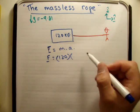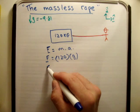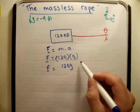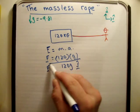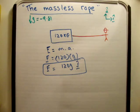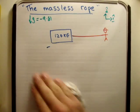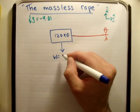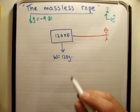Using Newton's second law, f equals ma, so F equals 120 times the acceleration. The acceleration of a body on earth is gravity, so this equals 120g in the j-hat direction.